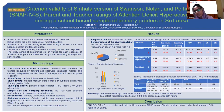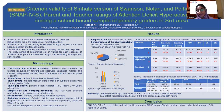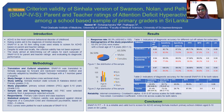Similar diagnostic performance was seen in the overall SNAP-4 scale for both raters, as described in Table 2. Values of Cronbach's alpha and correlation coefficient indicating high reliability of the scale were also evident.